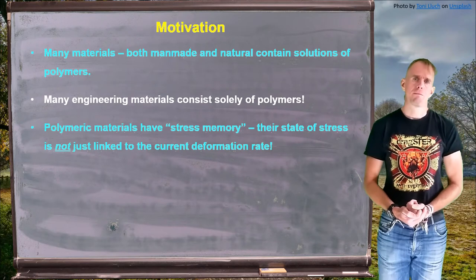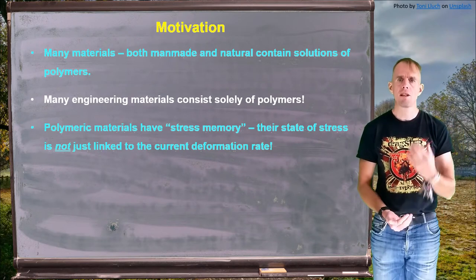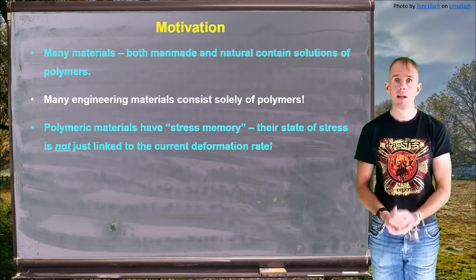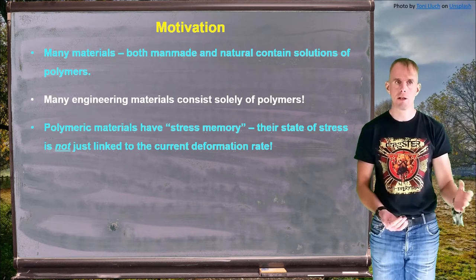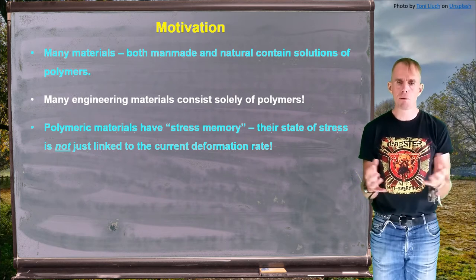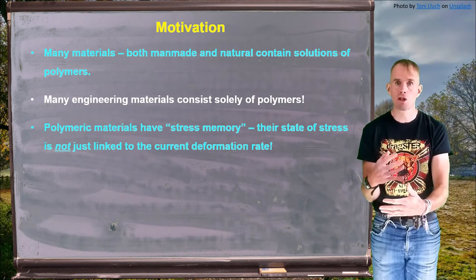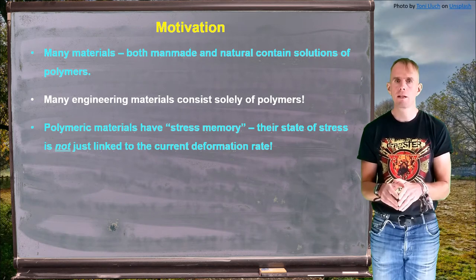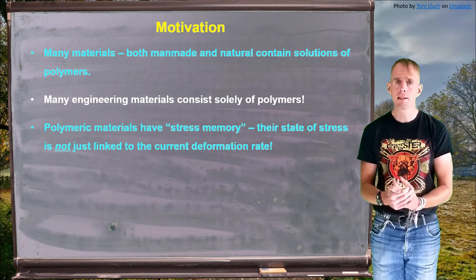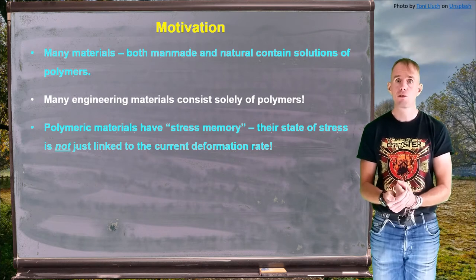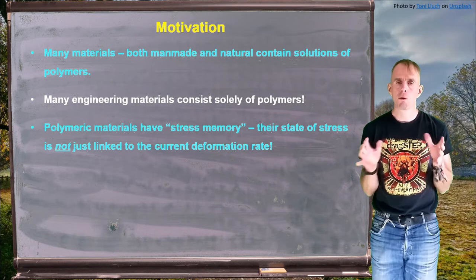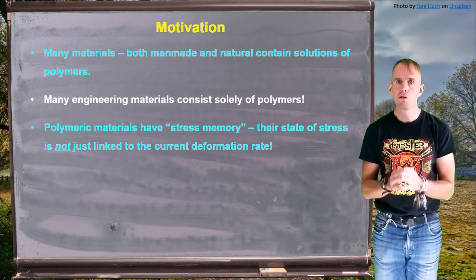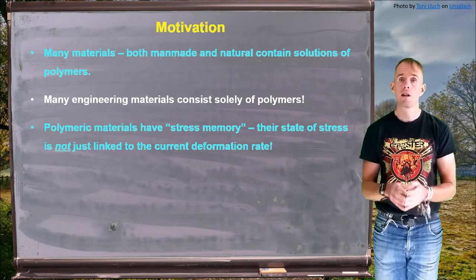The thing about polymers is that they have a stress memory. Their state of stress is not just linked to the deformation that's happening to them at a point in time — they can remember stress from a whole history of deformations. If we have a polymer not being actively deformed by a machine, but that has stress memory, that stress will drive a force and hence an acceleration. Which means that once we've stopped deforming a viscoelastic material with a machine, it will still continue to flow, and sometimes distort, in ways that we might not expect.